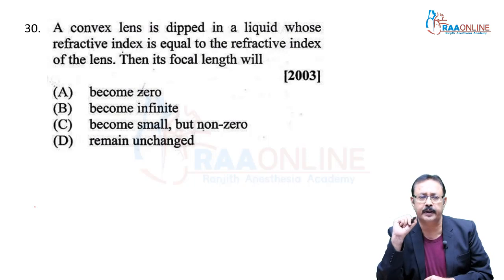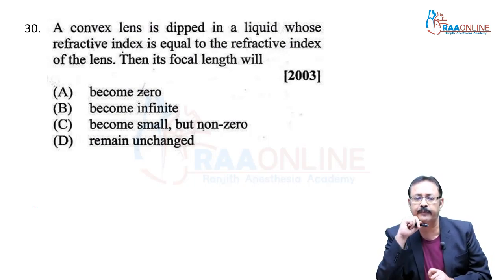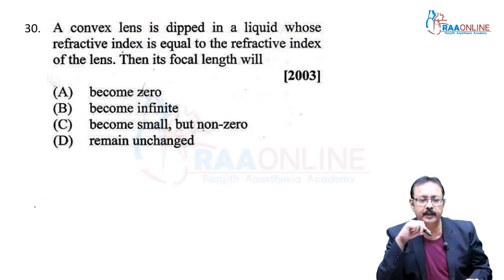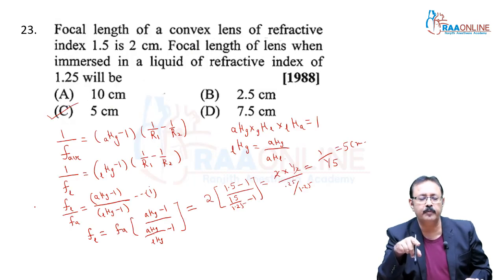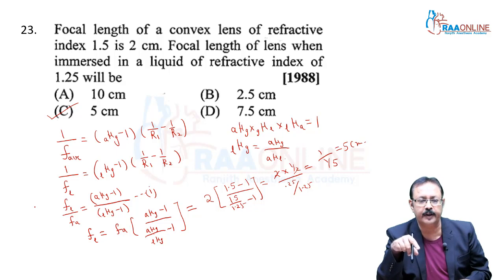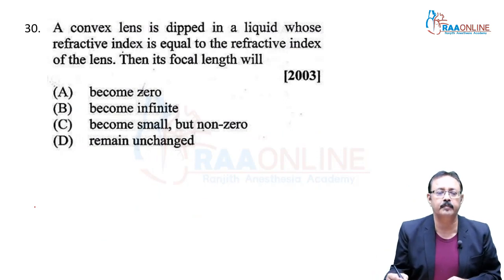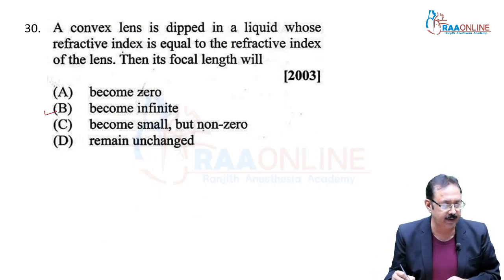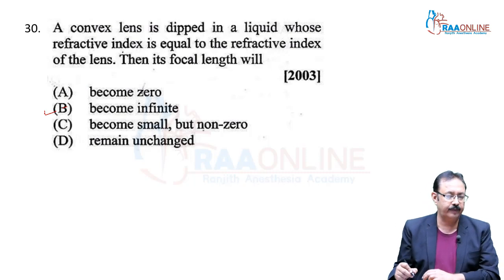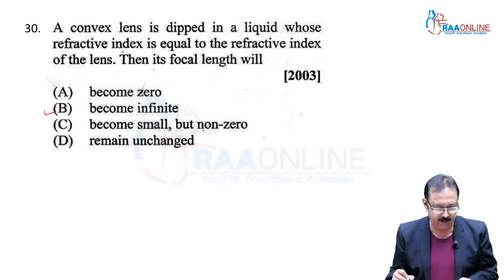Problem 30, from 2003. A convex lens is dipped in a liquid whose refractive index equals the refractive index of the lens. If the glass refractive index equals the liquid refractive index, the denominator becomes 0 and F becomes infinity — the lens becomes invisible. So focal length becomes infinite and we go with option B.